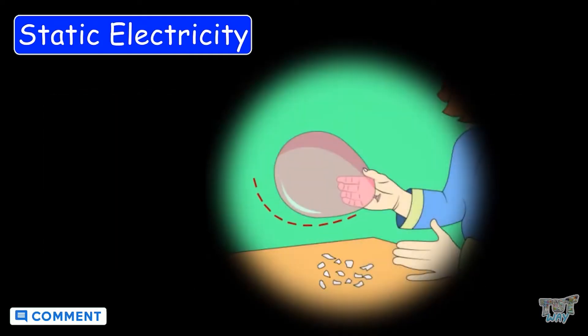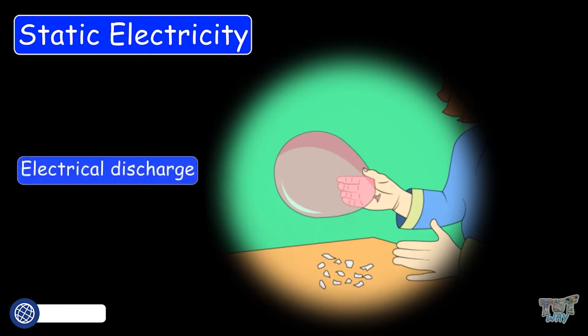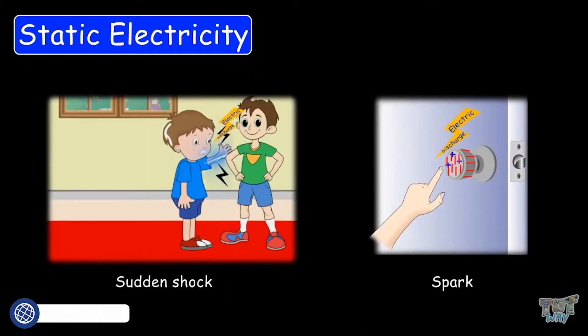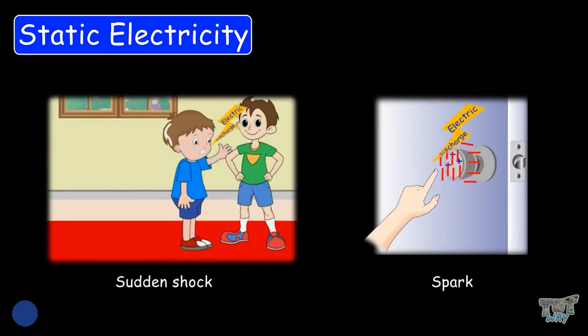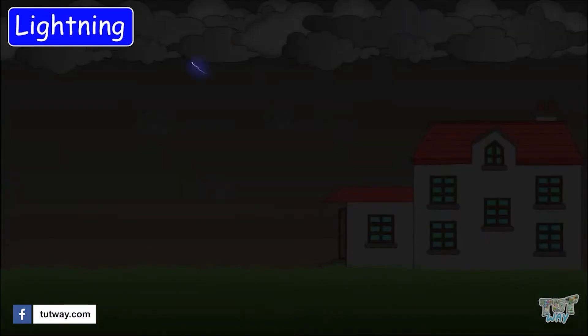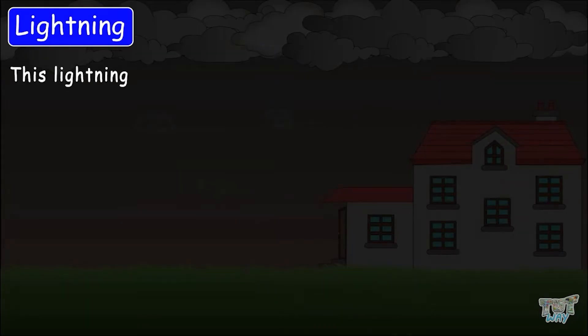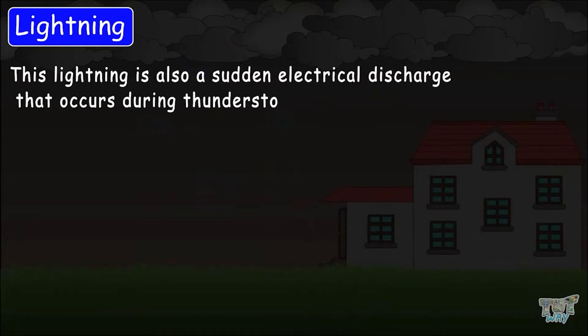The moving of charge into the air is called electric discharge, and it can be experienced as sudden shocks or sparks. Lightning is also a sudden electrical discharge that occurs during a thunderstorm.